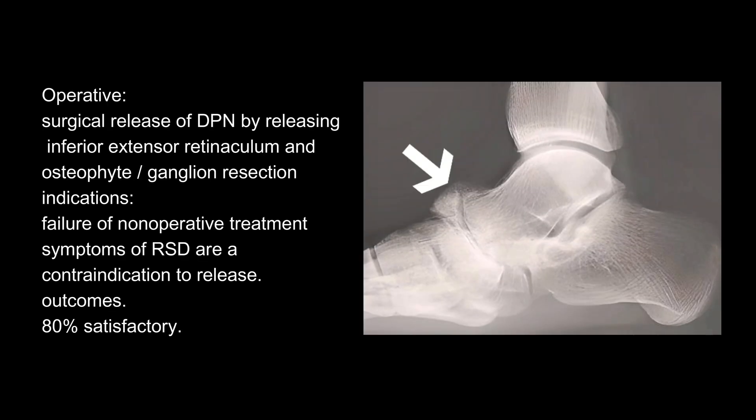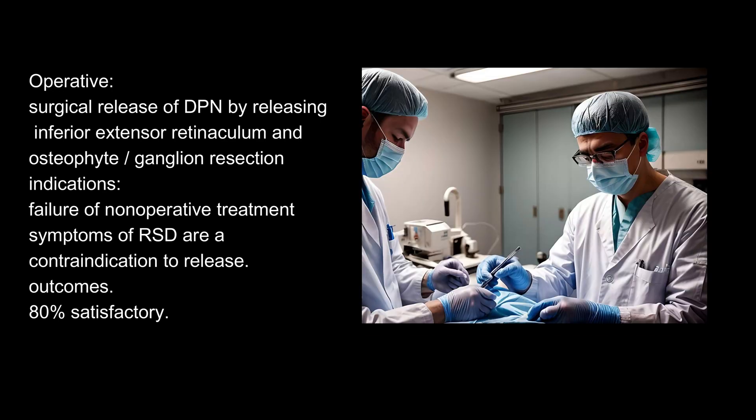Operative treatment: surgical release of the DPN by releasing the inferior extensor retinaculum and osteophyte, plus ganglion resection. Indications: failure of non-operative treatment. Note: symptoms of instability (ISD) are a contraindication to release. Outcomes: 80% satisfactory.